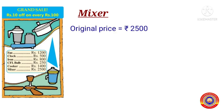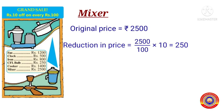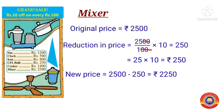The last item is the mixer. The original price of a mixer is equal to 2500 rupees. The reduction in price is equal to 2500 ÷ 100 × 10. After cancelling the zeros, we get 25 × 10, that is equal to 250 rupees. Therefore the new price of a mixer is equal to 2500 minus 250, that is equal to 2250 rupees.